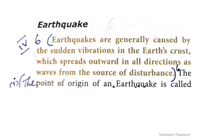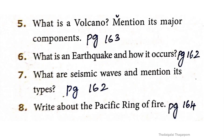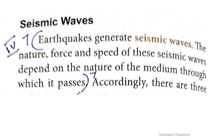Earthquakes are generally caused by disturbance. Seventh question: what are seismic waves and mention its types? The answer is given in page 162. Earthquakes generate seismic waves. The nature, force and speed of these seismic waves depend on the nature of the medium through which they pass.